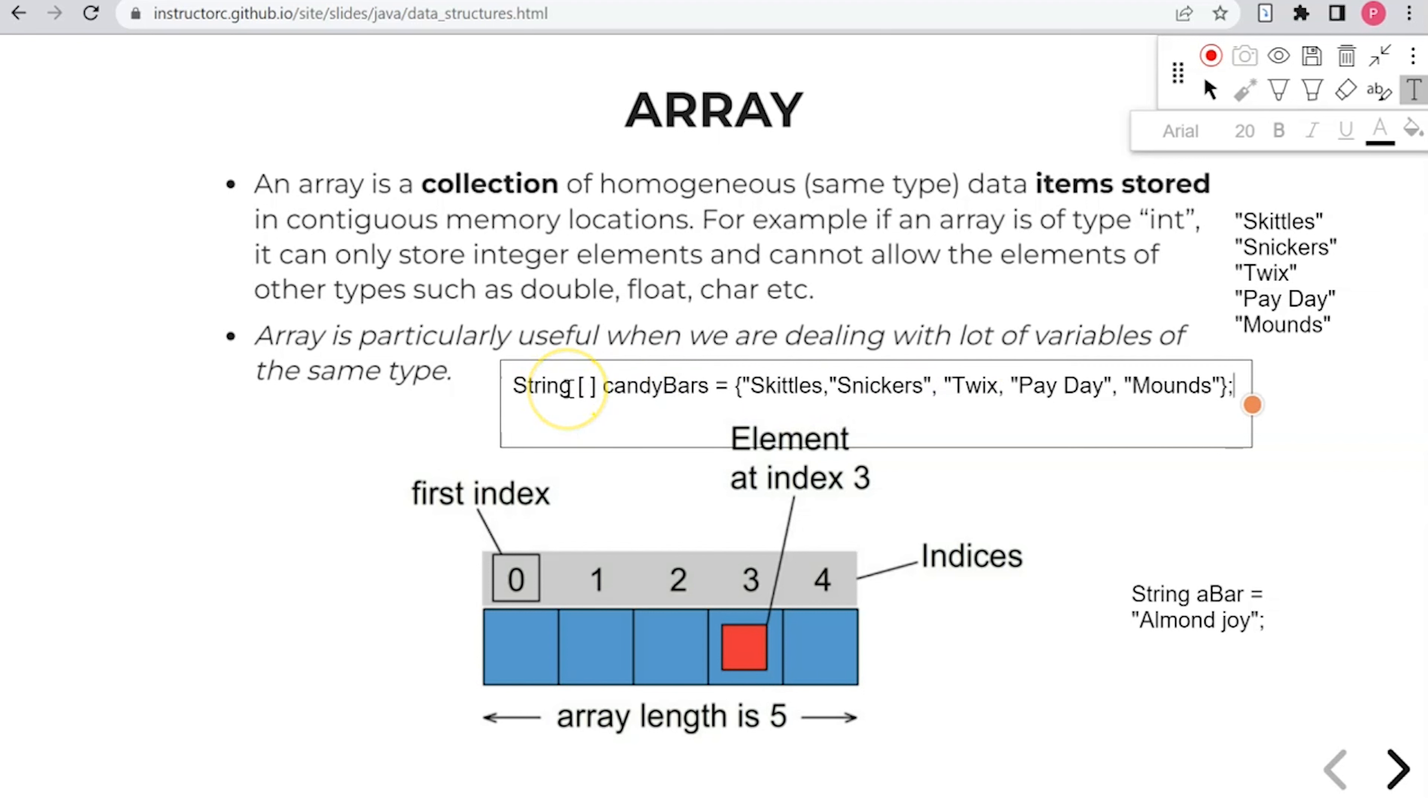Again, if this was numbers or numeric value, we could say int and then say ages and then put numeric data. And I'm missing the quotation here. So how does this work?